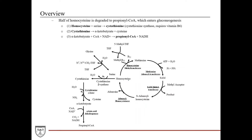The other half — homocysteine is degraded to propionyl-CoA. Starting with homocysteine: it combines with serine and is converted into cystathionine, catalyzed by the enzyme cystathionine synthase, which uses B6 as a cofactor. The bolded intermediates in this pathway are really important to know, and you'll see why that's important in the clinical pearls section.